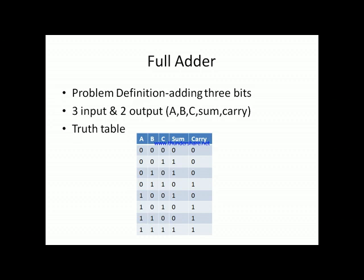With three binary input variables we get eight combinations: 000, 001, 010, 011, 100, 101, 110, 111. We derive sum and carry values for each combination. For sum, we add the three bits for each combination. The carry field is updated based on the addition result.